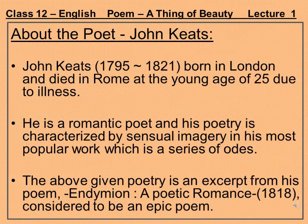Let's begin the poem with the introduction of the poet. John Keats was born in London in the year 1795 and died in Rome in 1821 at the very young age of 25 due to his ailment. John Keats is a romantic poet and his poetry is characterized by sensual imagery in his most popular work. This poem is a lyrical poem meant for a particular subject. Today his poems are one of the most sought after creations in English literature. 'A Thing of Beauty' is an excerpt from his poem Endymion, a poetic romance which he composed in 1818, and this poem is considered to be an epic poem.